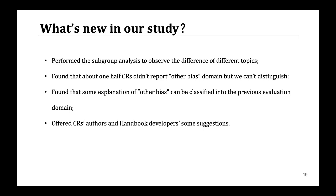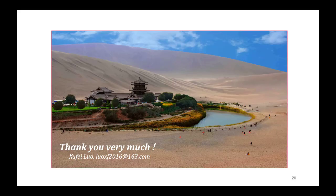What's new in our study? We summed up four points. First, we performed subgroup analysis to observe differences across different topics. Second, we found that about one half of reviews didn't report the Other Bias domain, but we could distinguish this. Third, we found that some explanations of Other Bias can be classified into the previous evaluation domain. And lastly, we offered Cochrane review authors and Handbook developers some suggestions. Thank you for listening.